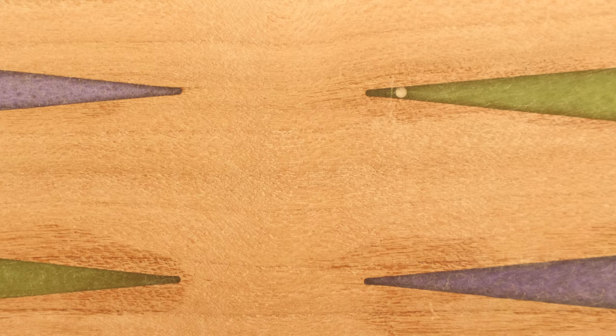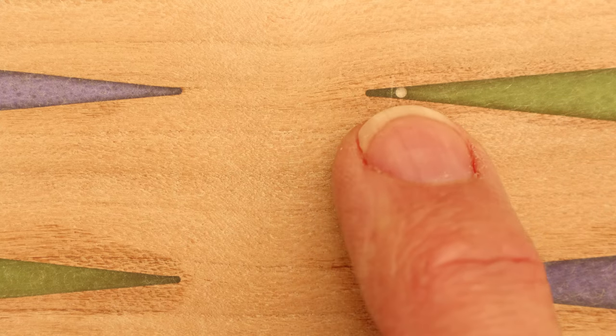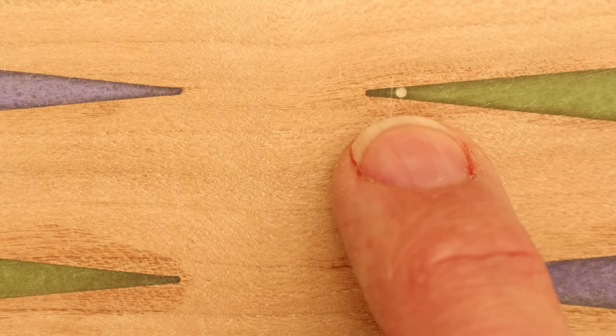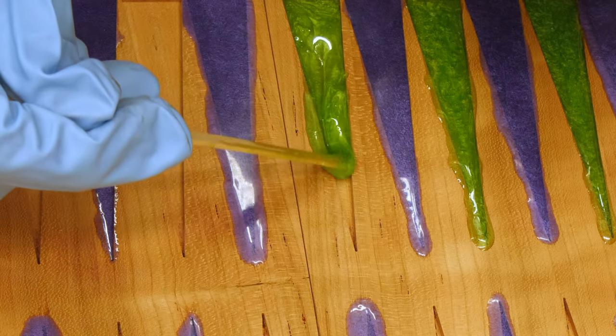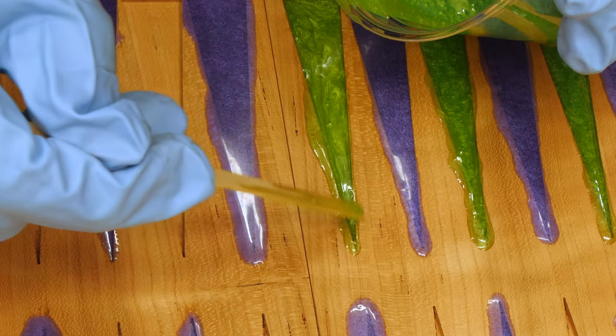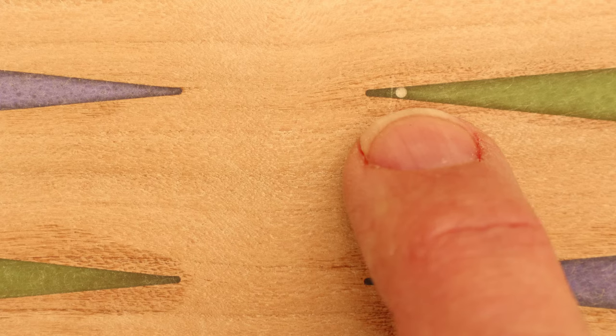Using the vacuum chamber seemed to work pretty well to get bubbles out of the epoxy mix, but I did get a couple of bubbles right near these points, like this one. And I think the problem wasn't that it was in the mix, but that it just got trapped when I moved epoxy into the point like that. And so in those cases, I'm going to clean them out, and then I'll just fill them in with clear epoxy, and it should look fine.